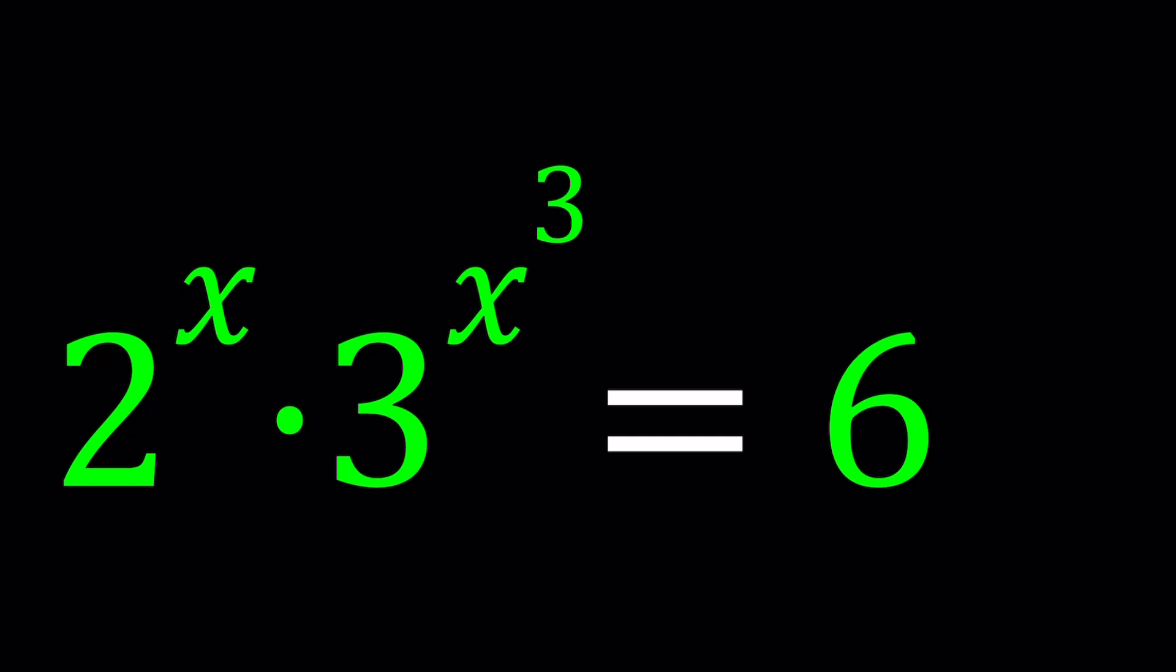2 to the power x times 3 to the power x cubed equals 6. We've done a similar problem before - I think it was 3 to the x squared and that gave us a quadratic equation in one of the methods. So is this going to give us a cubic equation? Let's find out.